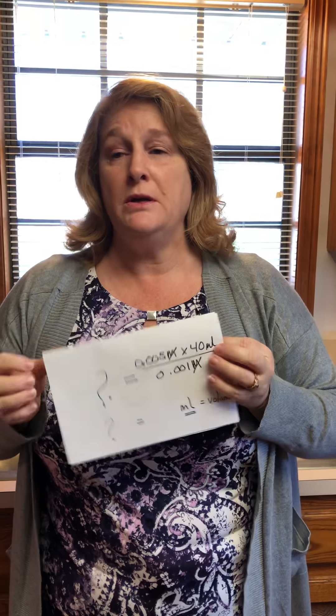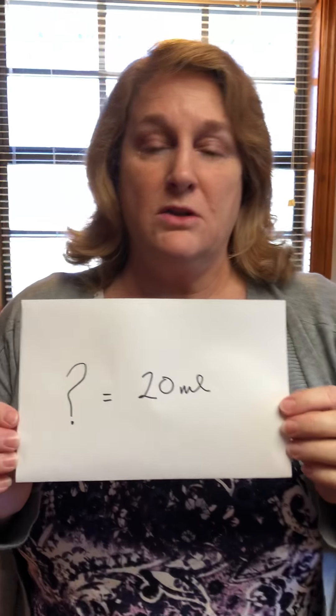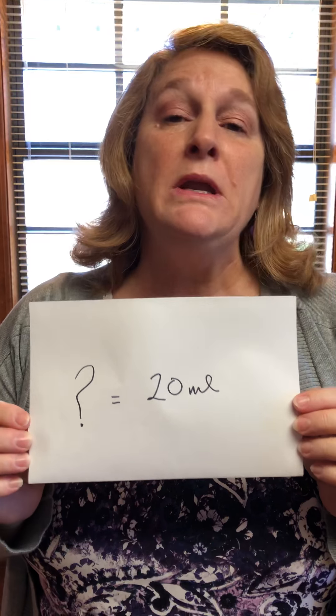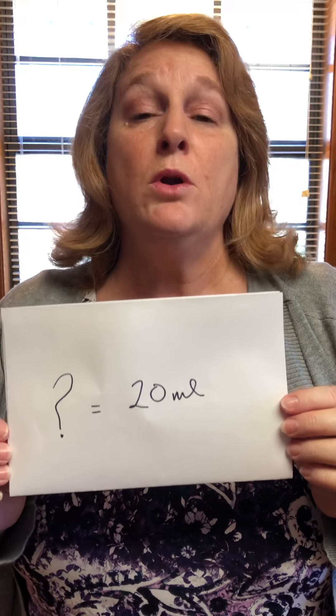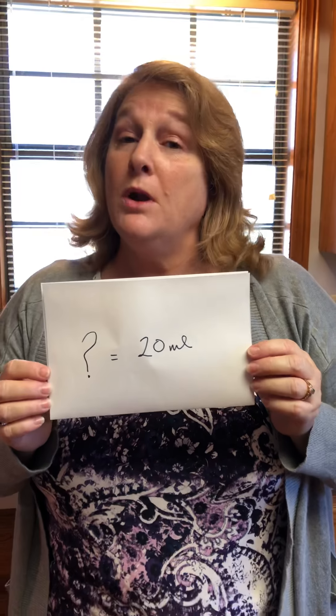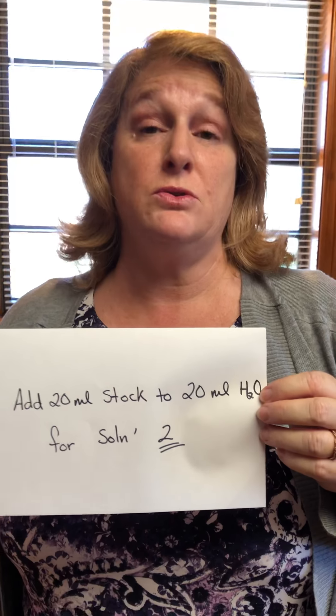When we do the math, we get 20 milliliters. So we need 20 milliliters of stock solution to get the concentration we want. But we're not all the way done, because we have to mix our solution. We take 20 milliliters of our stock solution and add it to 20 milliliters of water — because we originally wanted 40 milliliters total — and that gives us both the concentration and the volume we want.